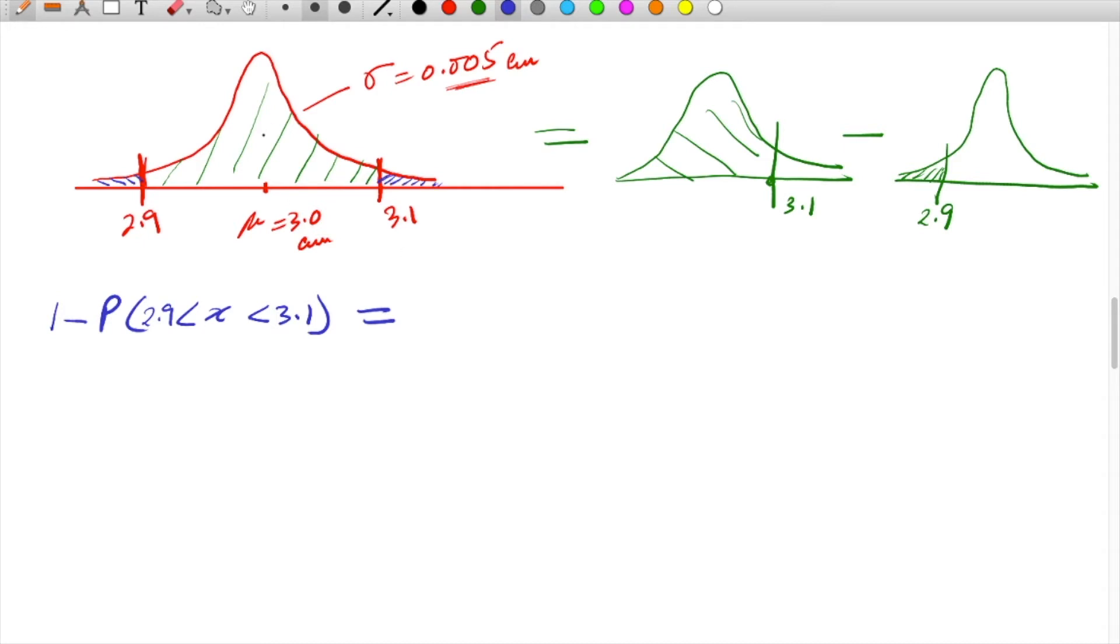There are two ways: either we calculate the probability within limits and subtract from one, or we calculate both tail probabilities. We can find probability of X less than 2.9 plus probability of X more than 3.1. Either way is possible.